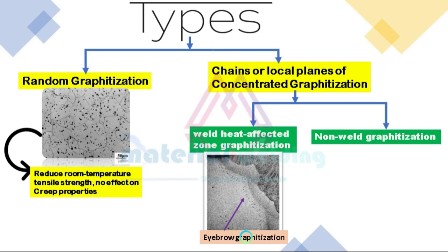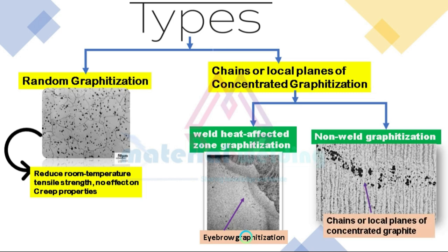The next type is non-weld graphitization. It is a form of localized graphitization that also occurs in a chain-like form. It sometimes occurs along planes of localized yielding in steel, in a chain-like manner, where the material experiences significant plastic deformation as a result of cold working operations or bending.